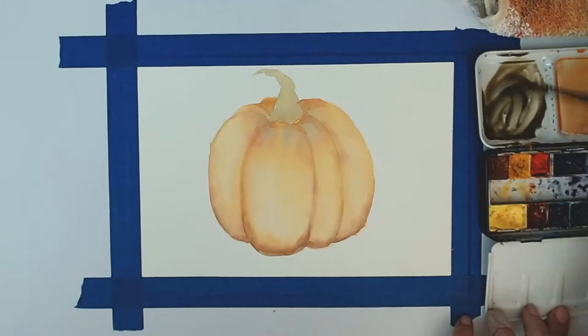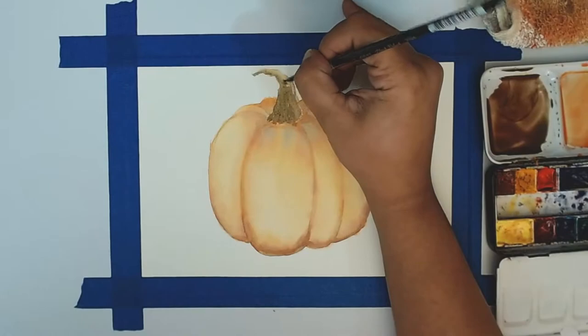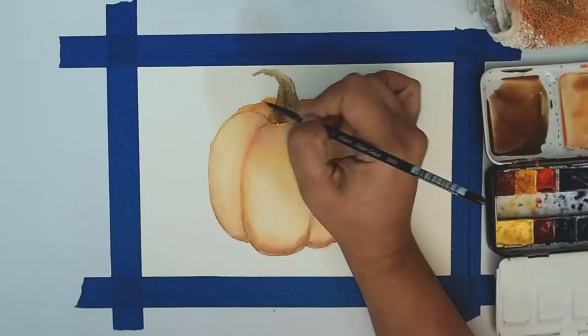I did like how you could see the brushstrokes, especially on the second and third layers when I was doing the glazing over the sections of the pumpkin. I thought that was a really neat effect and not necessarily something that I see very often in my work on cold press paper.